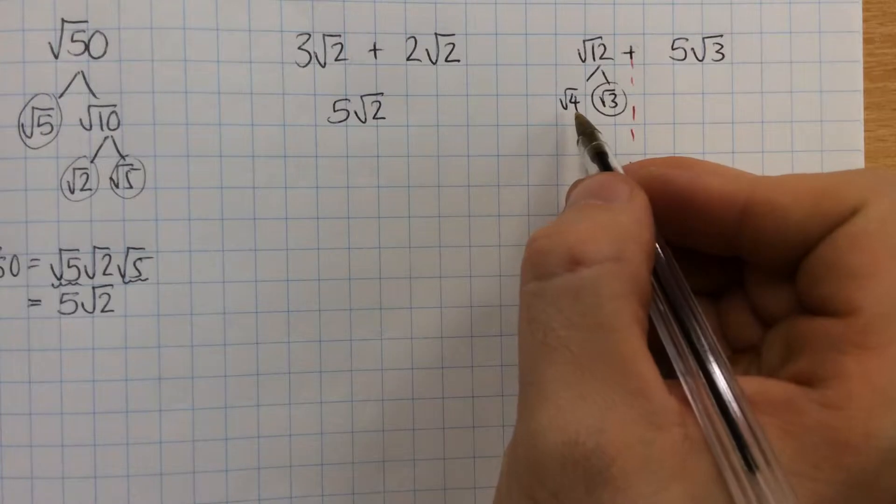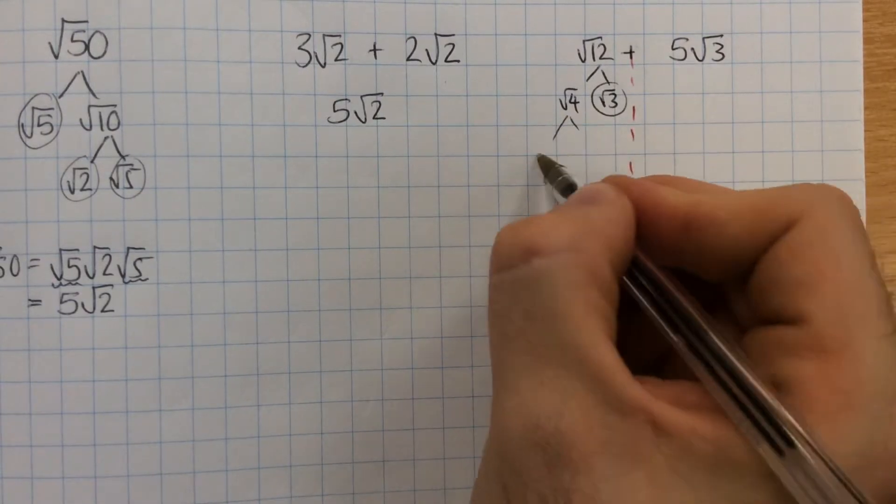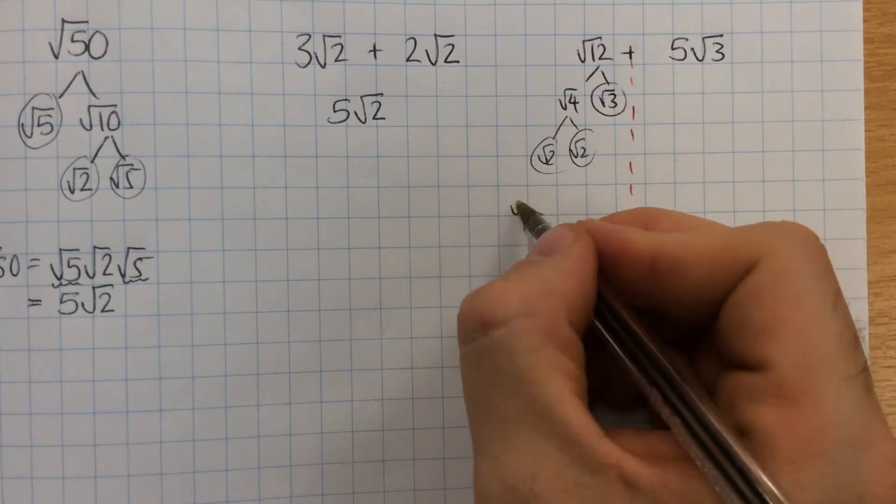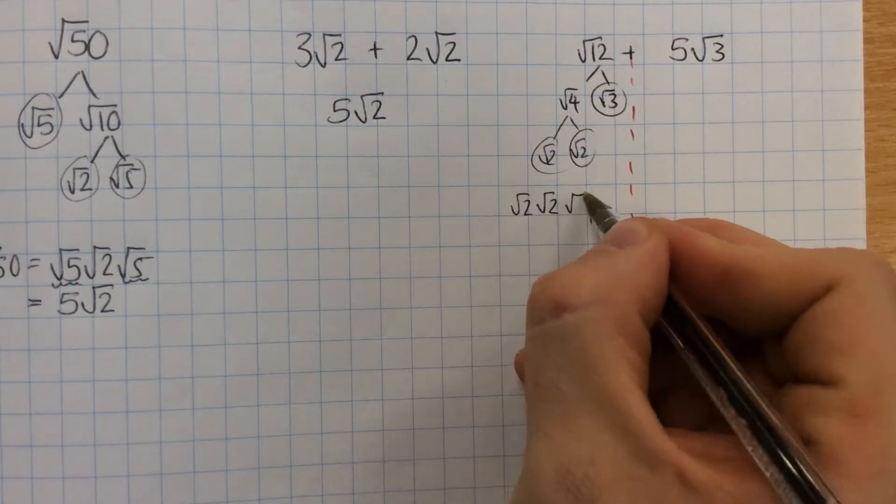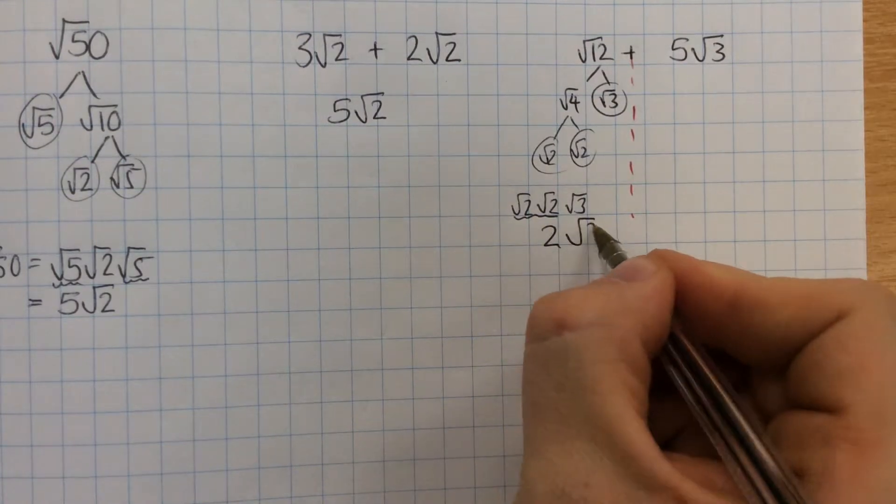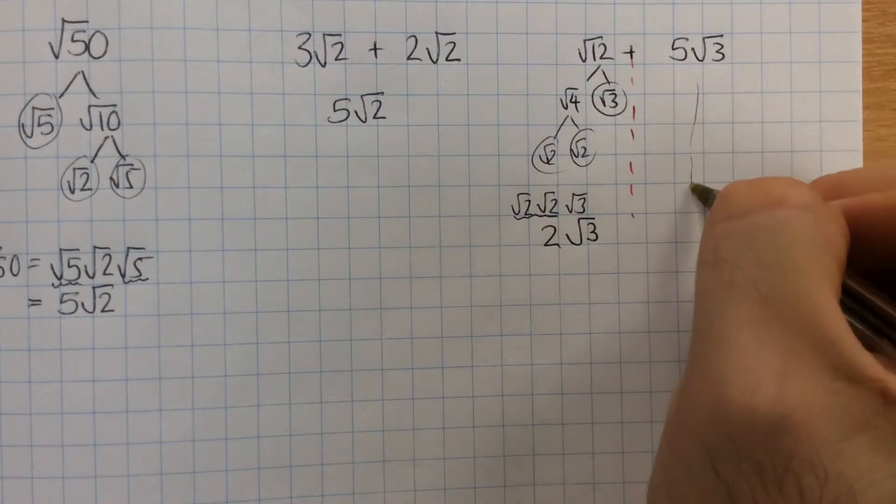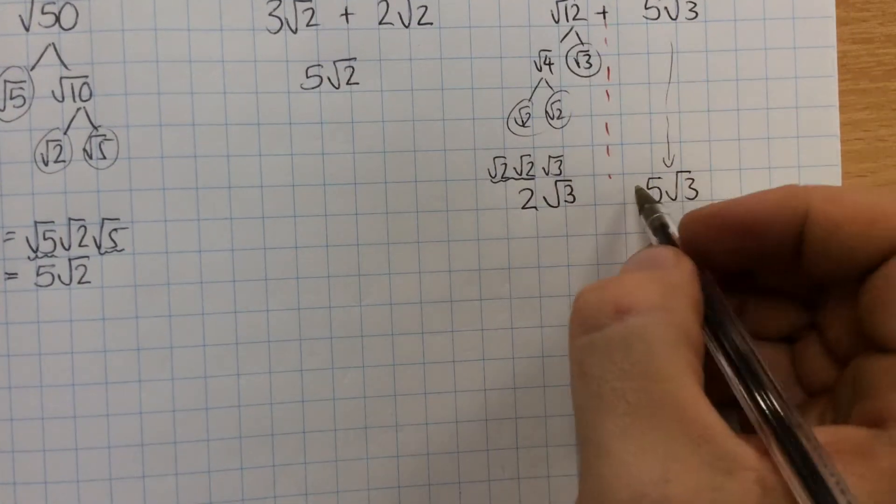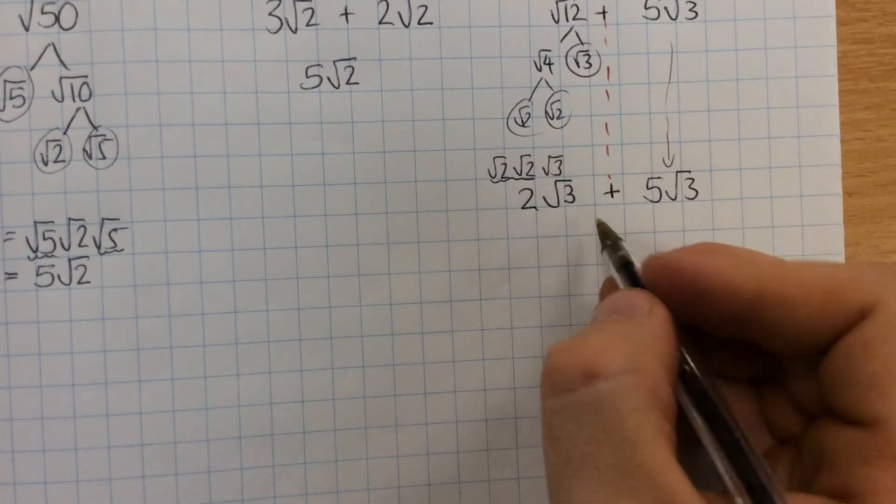Root 4, we can either remember that the square root of 4 is 2, or we can say that that's a root 2 times a root 2, and then we circle them both, and then we're left with root 2, root 2, root 3 here. And then, again, the 2 root 2's make 2, so this is 2 root 3. And then we bring this 5 root 3 all the way down, and they're added together. So we've got a 2 root 3 plus a 5 root 3, so that ends up as 7 root 3's.